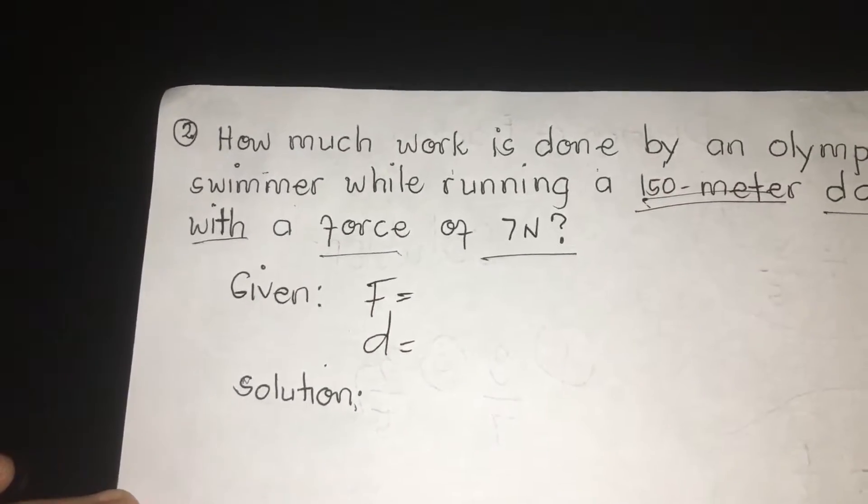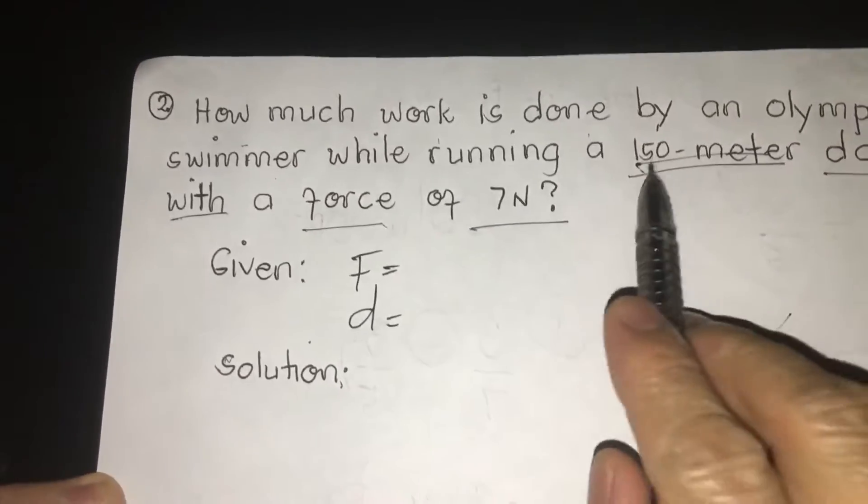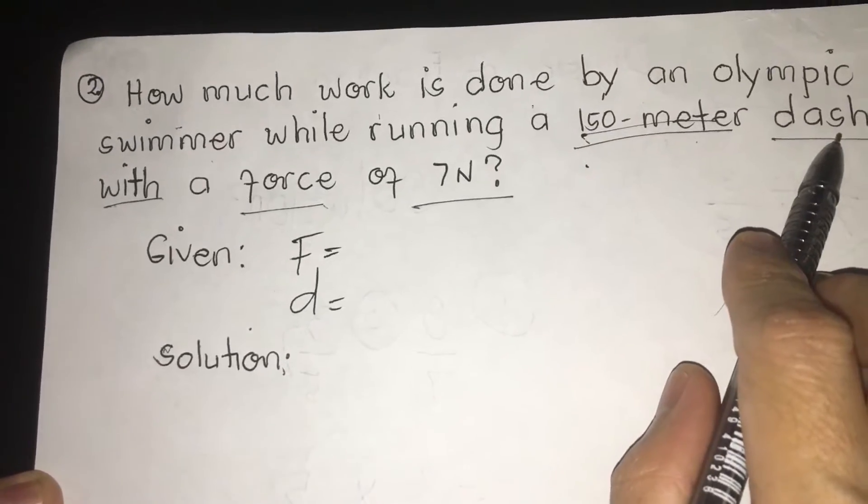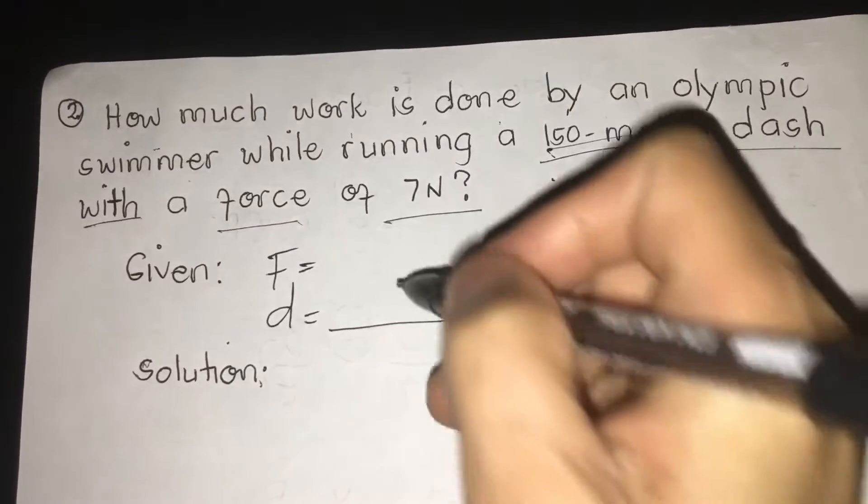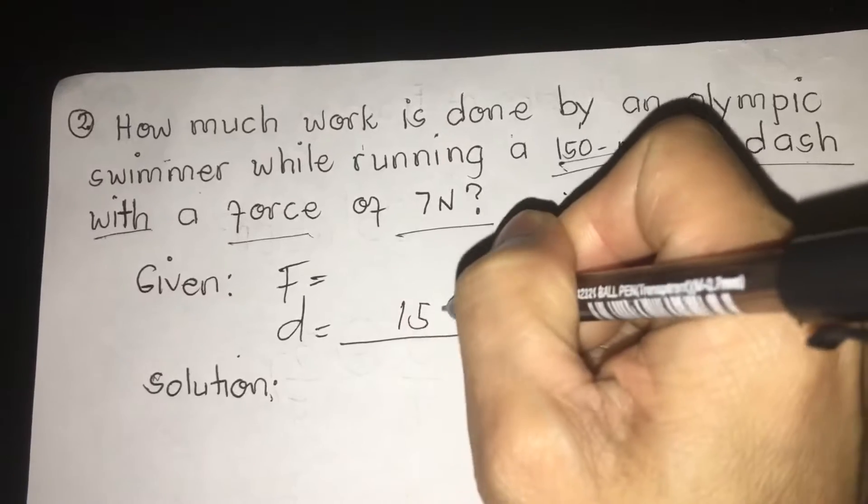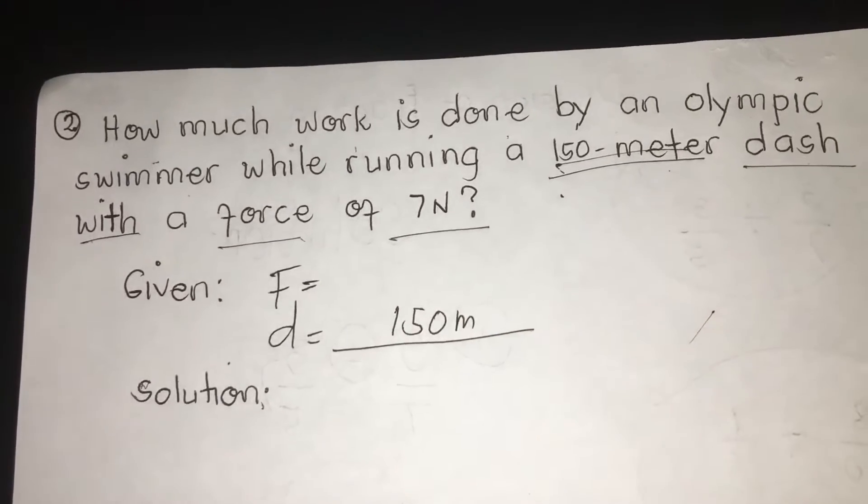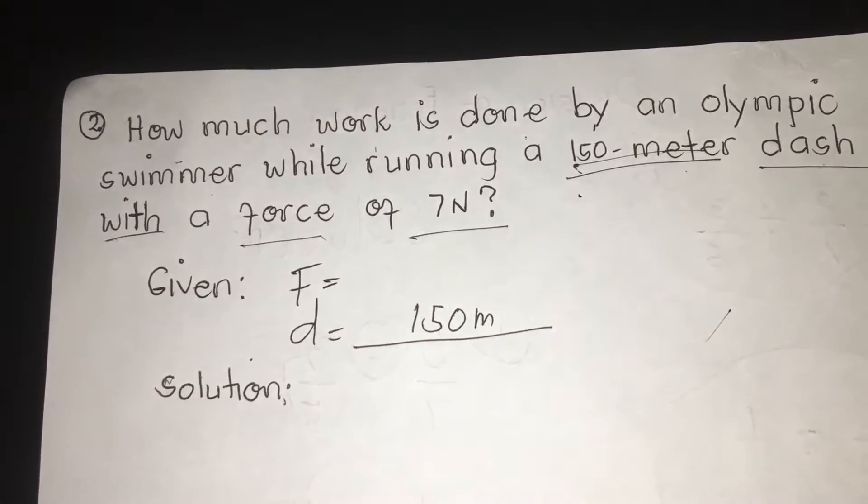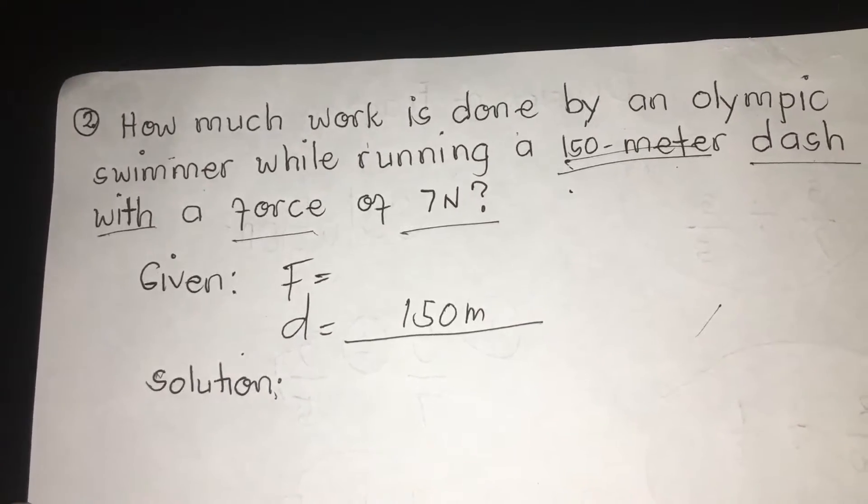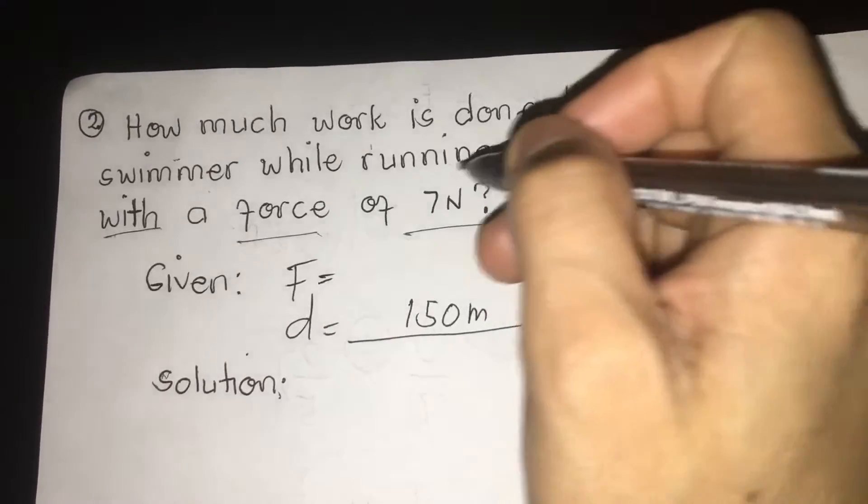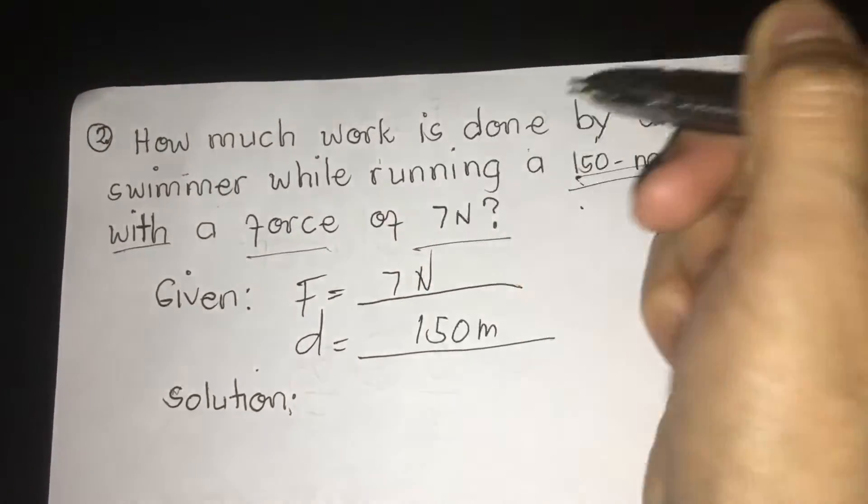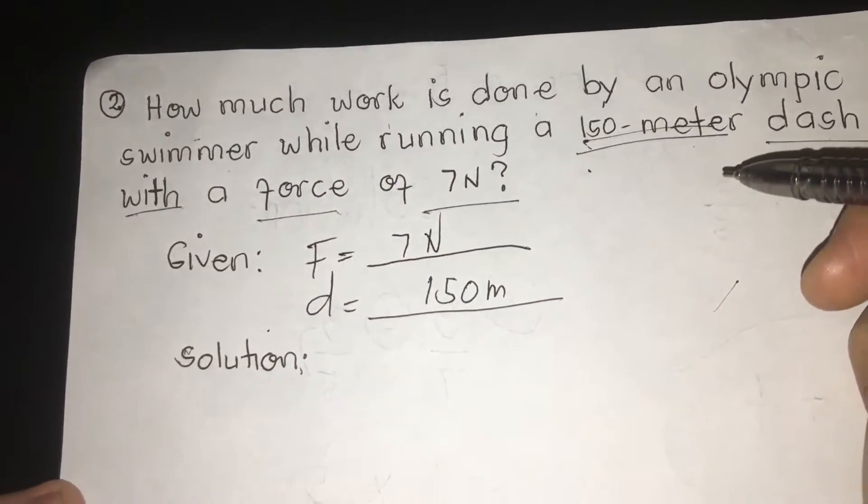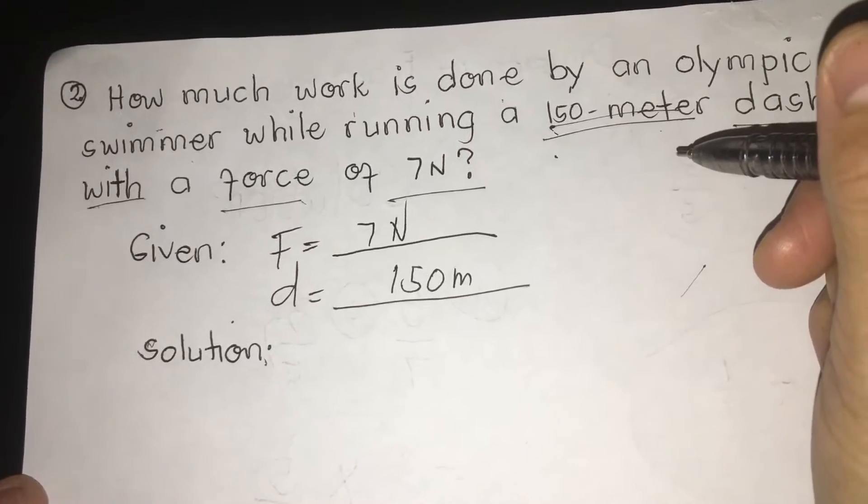So, we are going to find first the force and then the distance. In our example here, we have 150 meter distance. So, it belongs to distance. I am going to write 150 M, short for meter. What about force Teacher Ram? Yes, of course, you can call me Teacher Ram. So, I am going to write here 7 N.